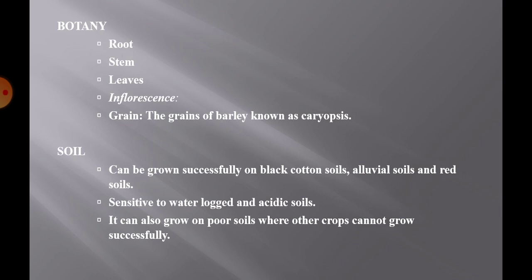Now the botany of this crop, covering root, stem, leaves, inflorescence and grain. The root system is fibrous. At the time of germination, the primary root develops from the seed and penetrates deep into the soil. It consists of several lateral roots. When the seedling reaches the 2 to 3 leaf stage, secondary roots develop from the crown bud located on the lowermost node near the soil surface. Some roots arise from the 2nd and 3rd nodes above the soil surface, known as brace or prop roots.